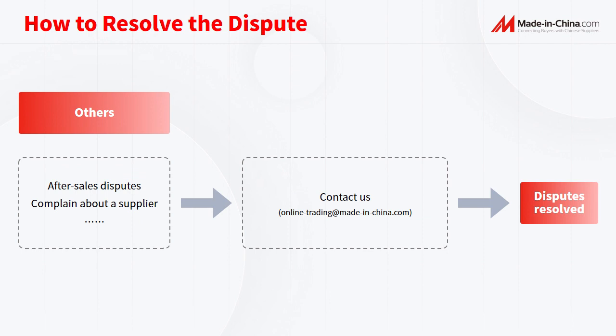If the supplier fails to fulfill their after-sales commitments, or if you find that the supplier has abnormal behavior and want to file a complaint, please do not hesitate to contact our platform via online trading at MadeInChina.com and provide relevant evidence. We will assist you in contacting the supplier, urge them to fulfill their order obligations, and actively resolve your dispute.